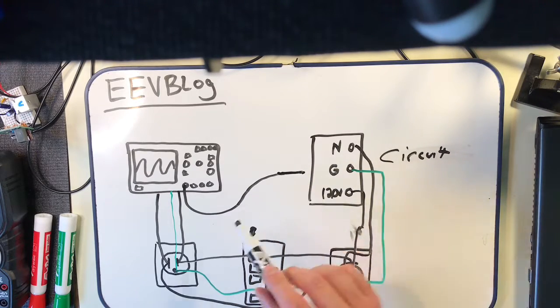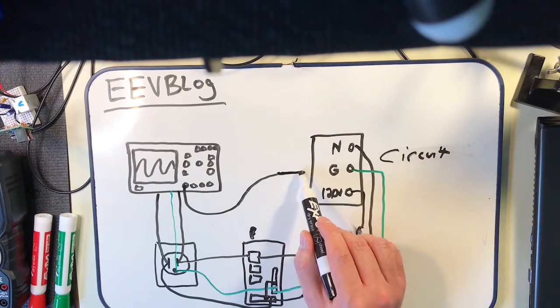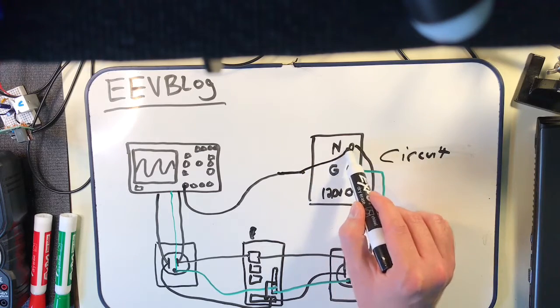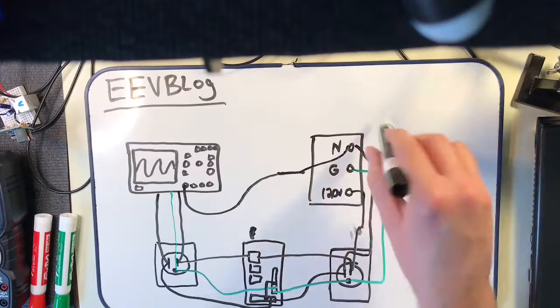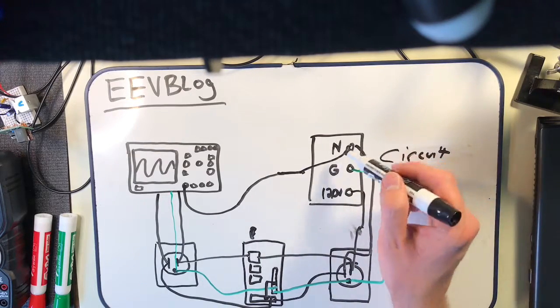So you just say, I'm just going to probe the neutral. You may not know it's connected to neutral, but that's what you end up connecting it to, either through some circuit path or something. It eventually ends up back in neutral.